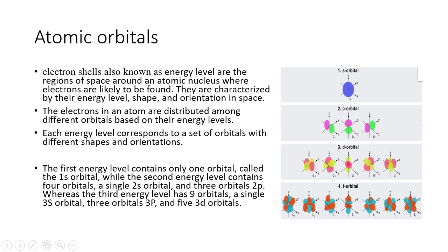Electron shells, also known as energy levels, are the regions of space around an atomic nucleus where electrons are likely to be found. They are characterized by their energy level, shape, and orientation in space. The electrons in an atom are distributed among different orbitals based on their energy levels. Each energy level corresponds to a set of orbitals with different shapes and orientations.